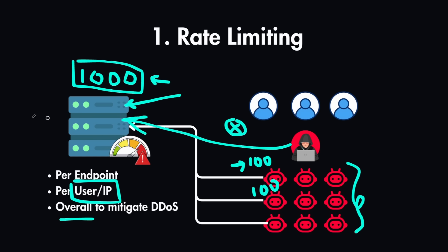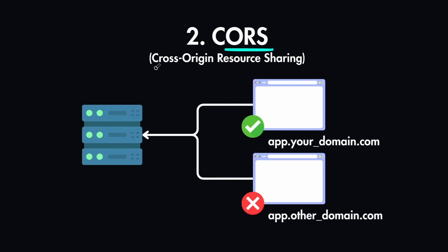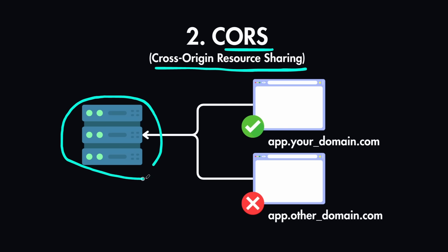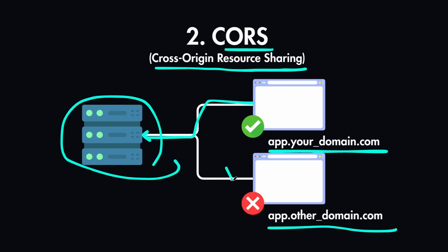The second one is CORS, which stands for Cross-Origin Resource Sharing. This controls which domains can call your API from a browser. Without proper CORS, malicious websites could trick users' browsers into making requests on their behalf. For instance, if your API is only meant to serve your front-end app at app.yourdomain.com, then only requests from that source should be allowed. If anyone else sends a request from app.anotherdomain.com, you should block it and not allow them to use your API for authenticating or accessing any of its data.